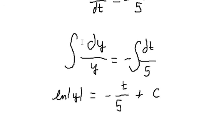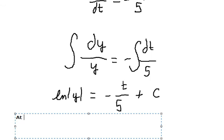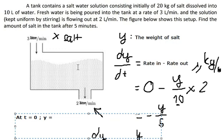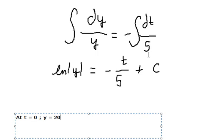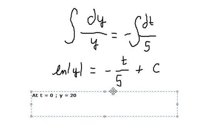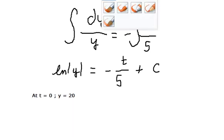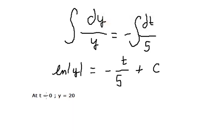Next, we apply the initial condition: at t equals 0, y equals 20 (the initial amount of salt). Substituting in, we get ln(20) equals C.